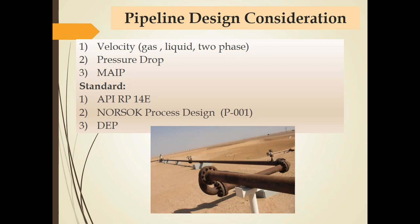Kriteria untuk pipeline design meliputi velocity, baik gas, liquid, maupun two-phase, serta pressure drop. Desain juga bisa mempertimbangkan maximum allowable incidental pressure. Beberapa contoh standar adalah API Recommended Practice 14E, Norsok process design, dan juga DEP. Pipeline design criteria include velocity for gas, liquid, or two-phase flow, and pressure drop. Some pipeline designs also consider maximum allowable incidental pressure. Standards that can be used include API Recommended Practice 14E, Norsok process design, and DEP.